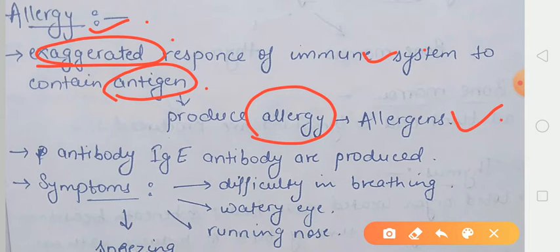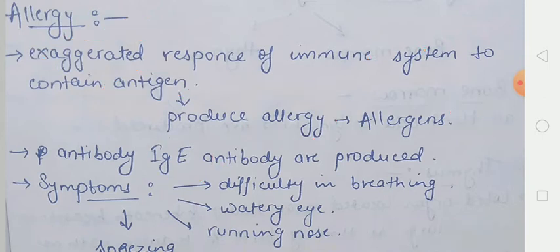Jab bhi allergy hoti hai, toh humara jo immune response hai, system hai, voh kisi na kisi tariqe se respond kerta hai, aur us time pe antibodies banti hai. Toh allergy ke time pe koon si antibodies banti hai? IgE type ki antibodies banti hai.